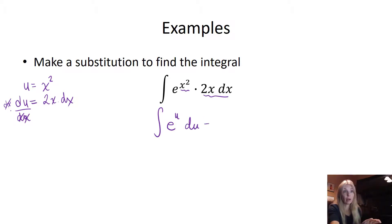Now, this is easy, right? The antiderivative of e to the anything is e to the anything. Okay, and then plus c. And then just don't forget, most important step, substitute back your u value.